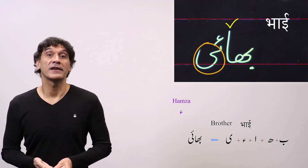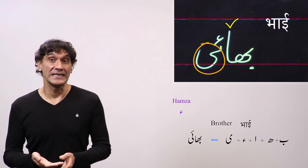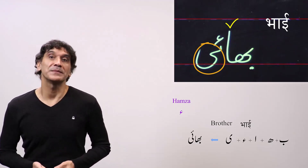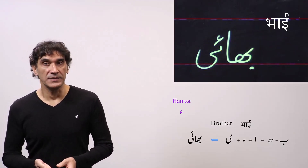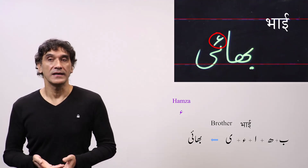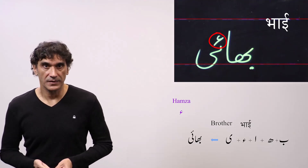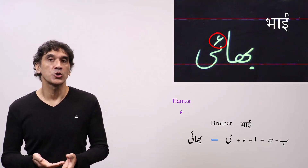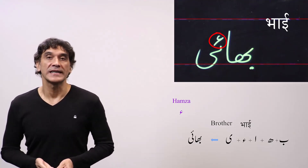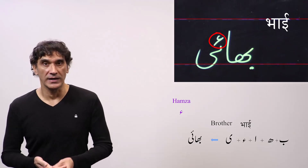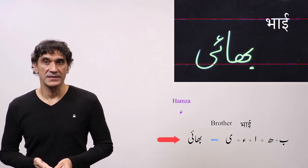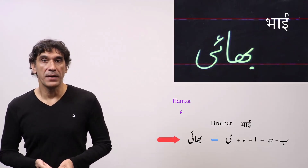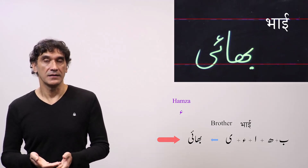So after Bha you have another vowel E, the long E. That means the vowels A and E will be separated by Hamza. So you add a Sosha for Hamza and add Chhotiye to represent the Hindi long E. So Bhaa plus Hamza plus Chhotiye: Bhai.